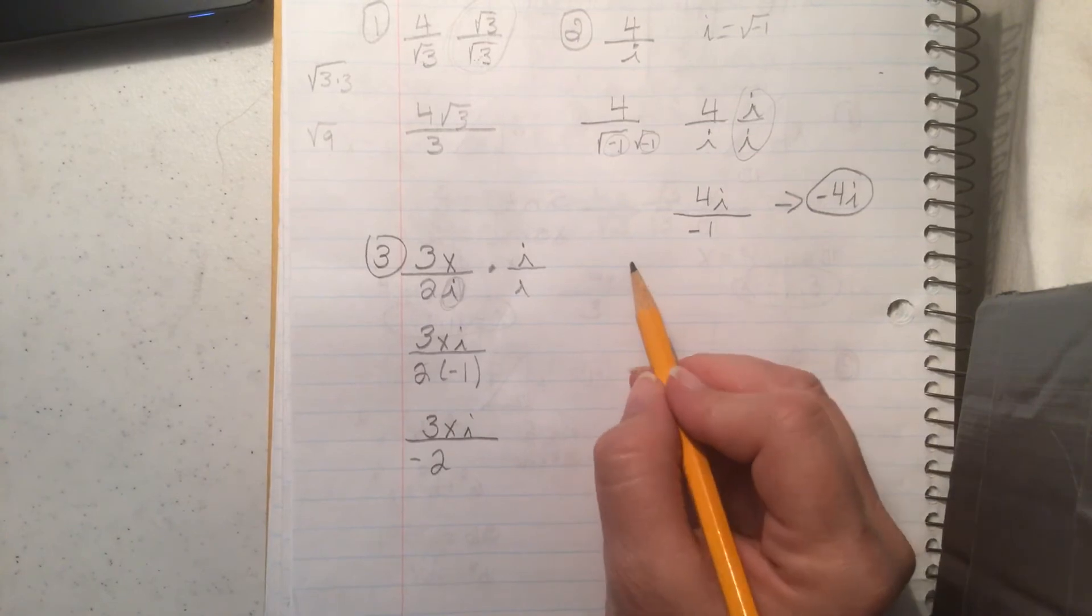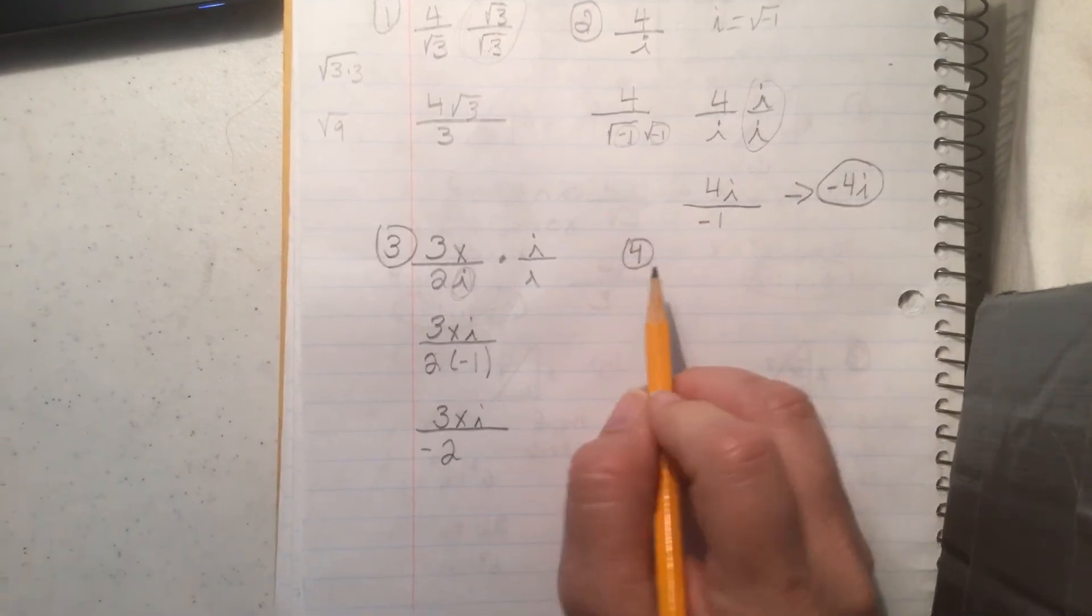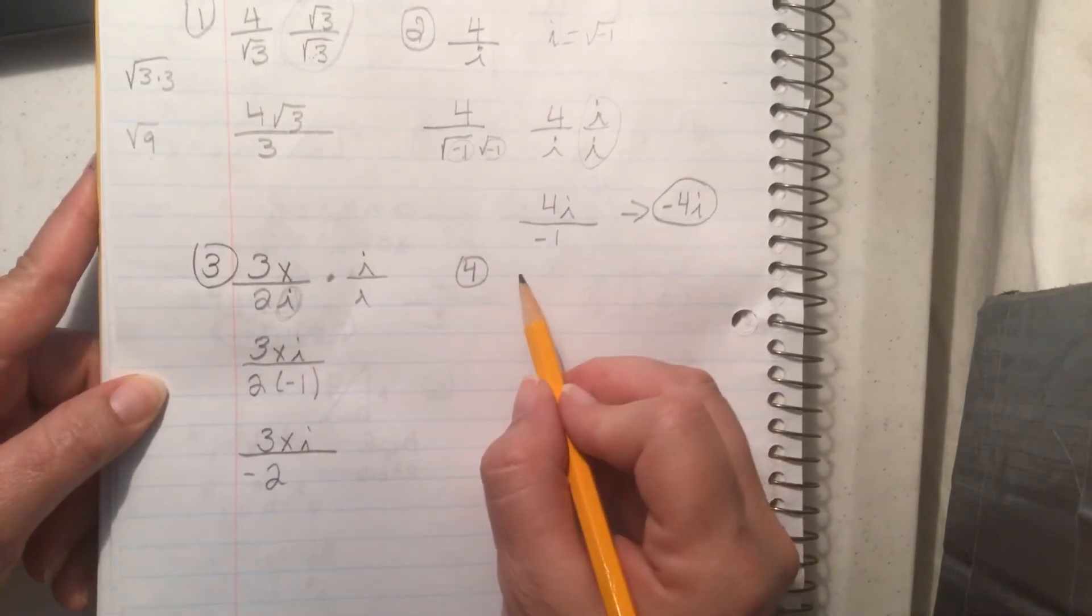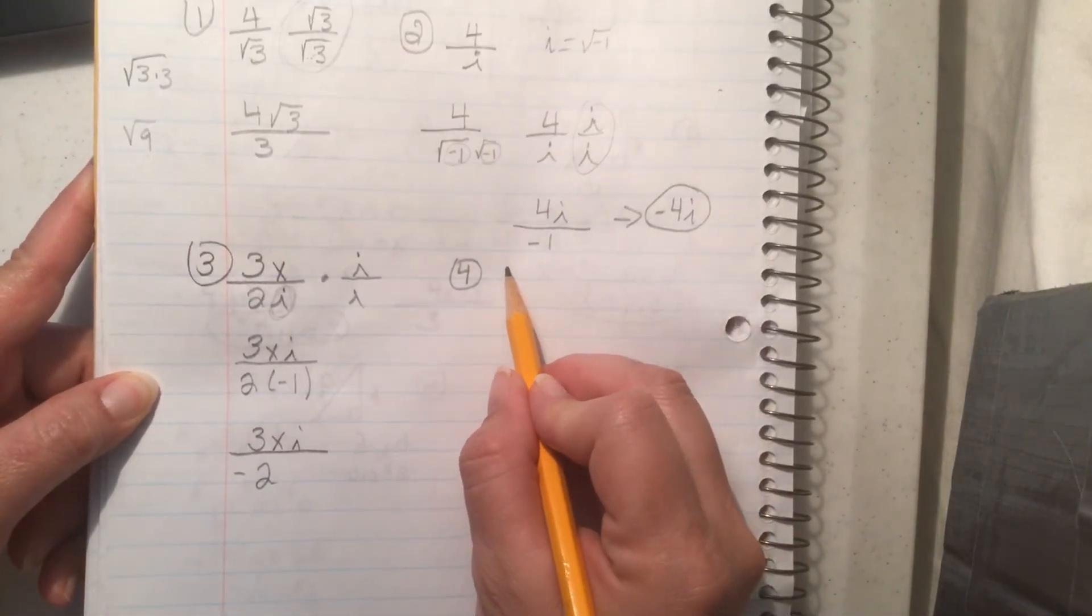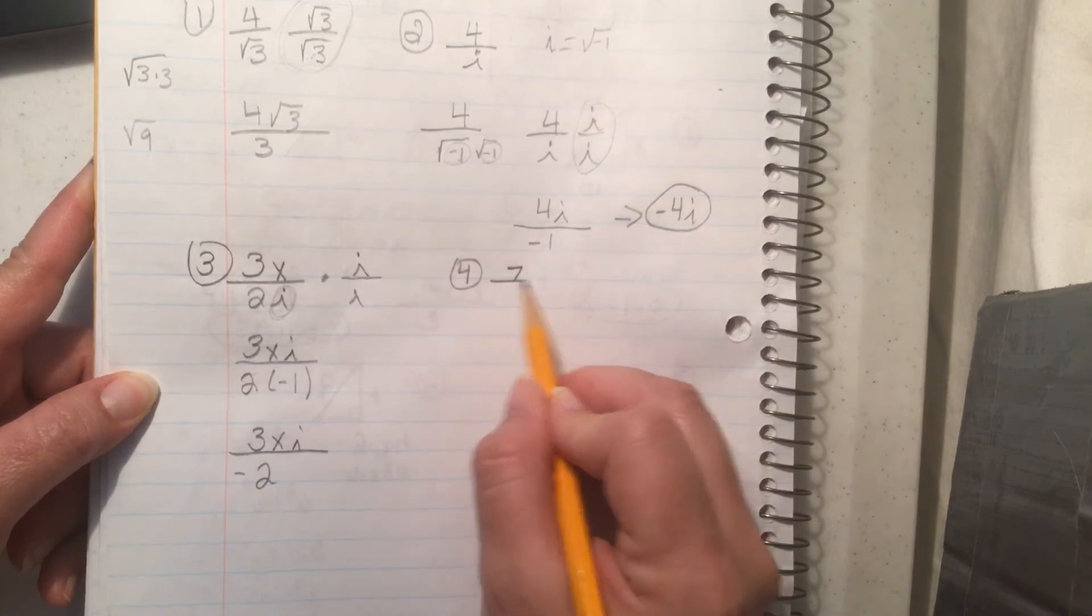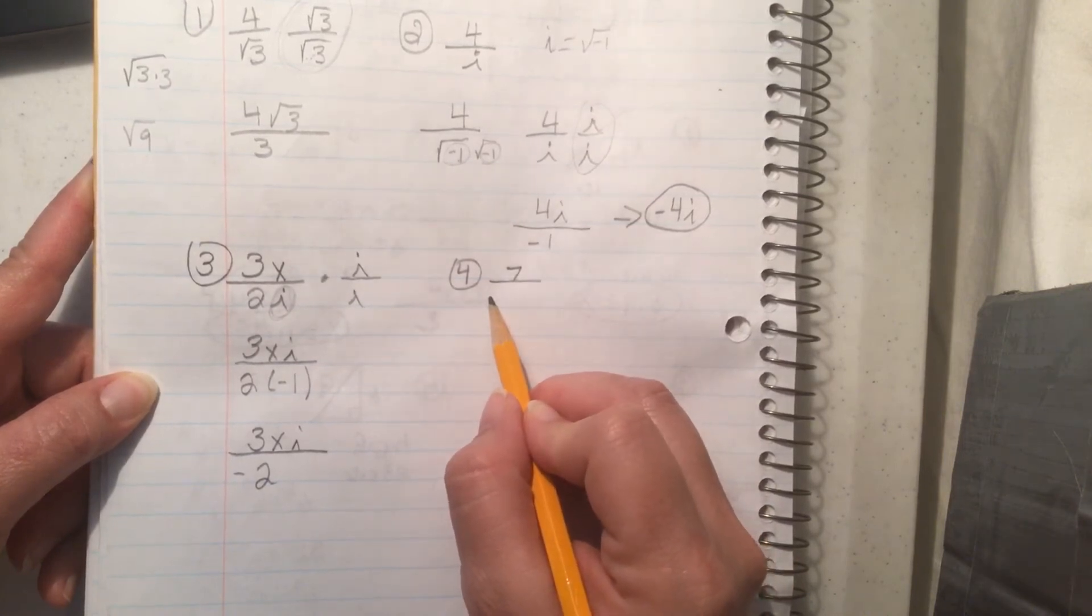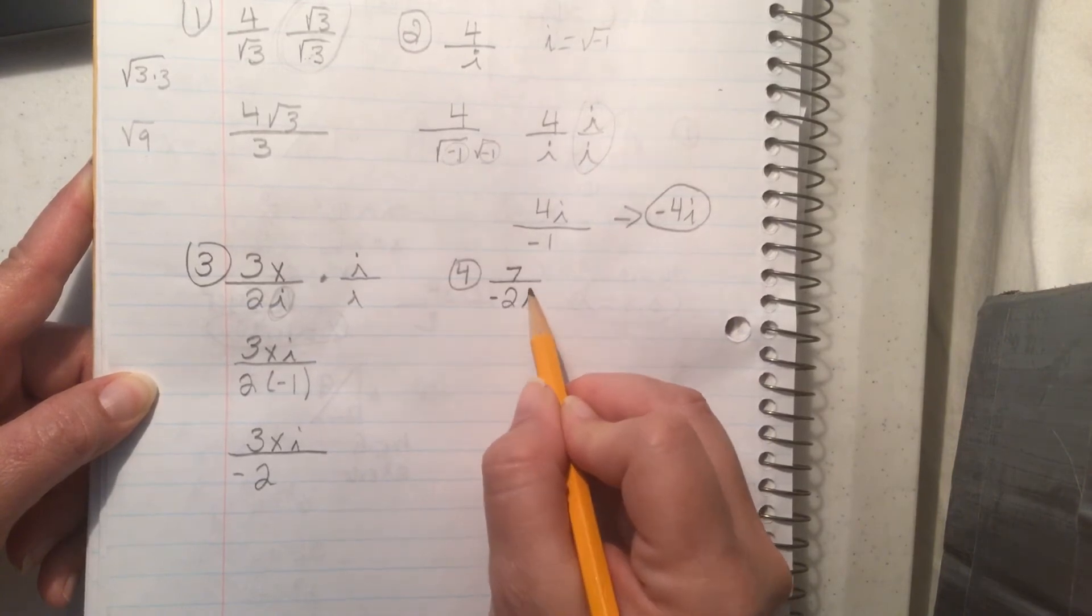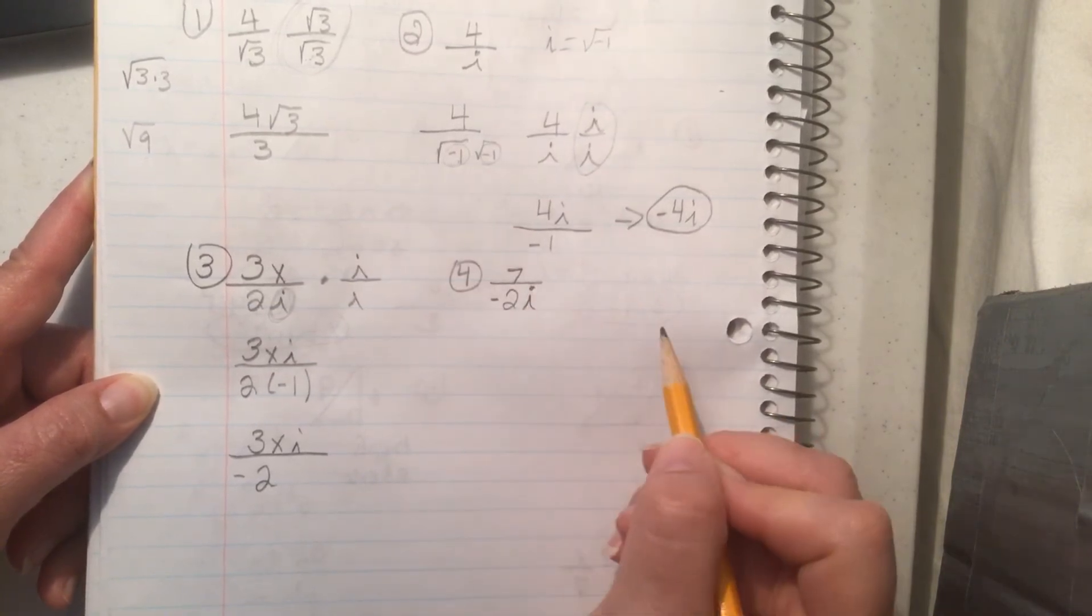Alright? Try one more. Alright, on this one. Ooh! Let's make this one fun. Let's make this one 7 over negative 2i. That one's not too, too hard. Try that one.